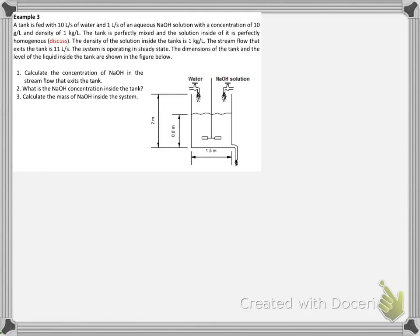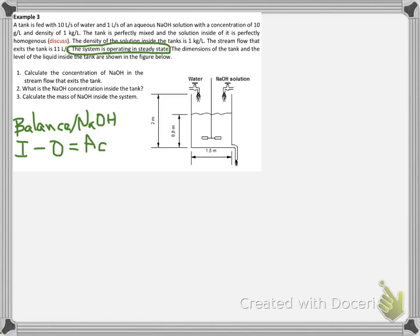Now for solving number 1, to find the concentration of sodium hydroxide in the stream flow that exits the tank, let's start doing the mass balance on the NaOH. The balance is: input minus output equals accumulation. Since our system is working in steady state, accumulation is zero. So input of sodium hydroxide is equal to the output of it.